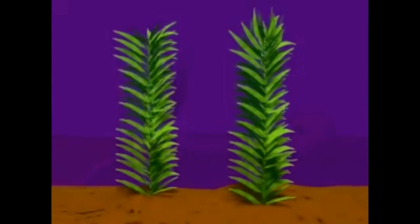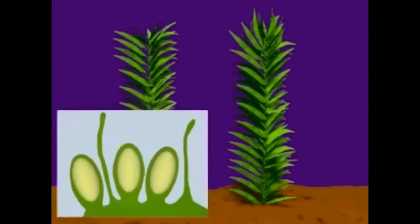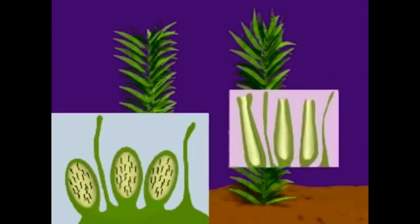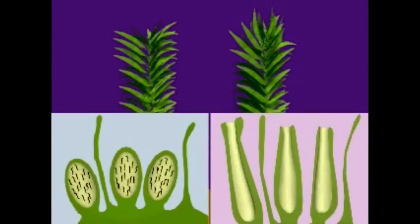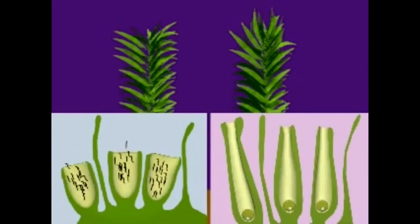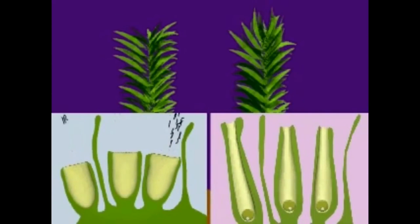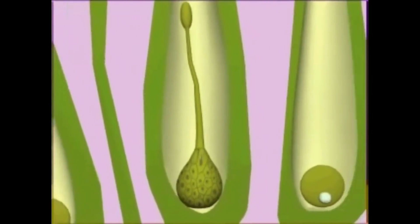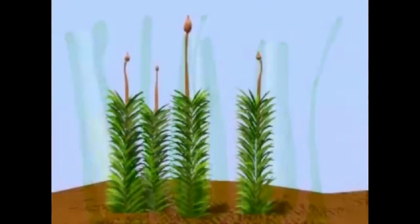The gametophyte is the adult plant body. It contains two distinctive structures called antheridia and archegonia. Antheridia produce male gametes, and those male gametes fuse with the female gametes present in archegonia. The zygote resulting from sexual reproduction develops into a diploid sporophyte.